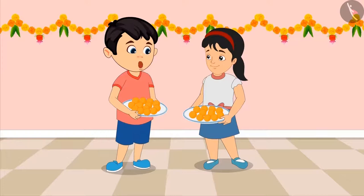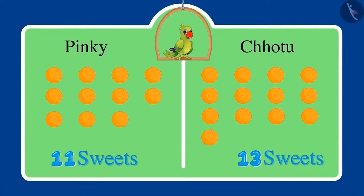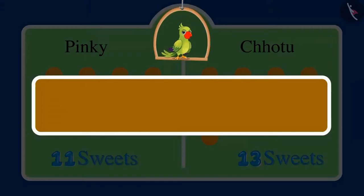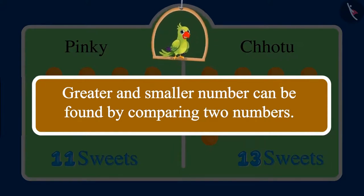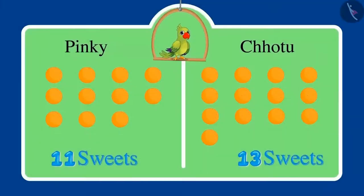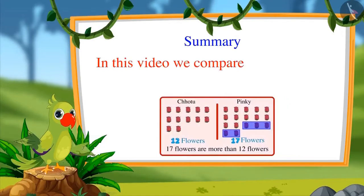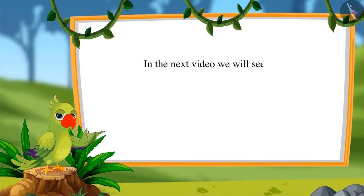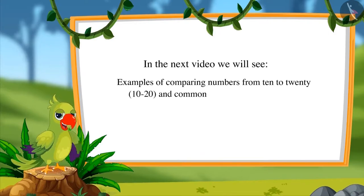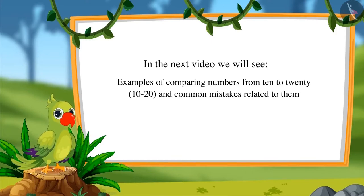Yes Pinky, come on, let's distribute all the sweets to our neighbors. So children, in these examples you saw how Pinky and Chotu compared two numbers and found out which number is greater. You can also compare the number of such objects around you. That is all for today. In this video we compared numbers from 10 to 20. In the next video, we will see some more examples of comparing these numbers and some common mistakes related to them. Till then, bye friends.